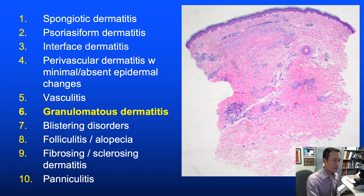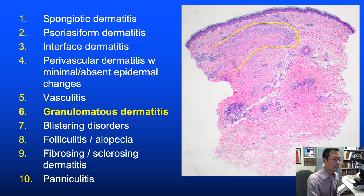Granulomatous dermatitis—what Ackerman originally classified as nodular and diffuse dermatitis—features granulomas: nodular aggregates of predominantly histiocytes. This is illustrated by a palisaded granuloma of granuloma annulare. Infection is a major consideration with granulomatous dermatitis and is covered in a separate lecture on non-infectious granulomatous dermatitis.